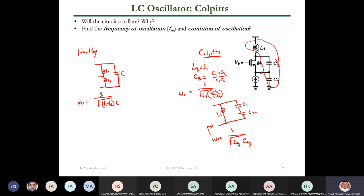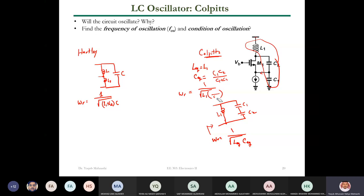Let's dive into the Colpitts and find the frequency of oscillation. One correction: the series capacitance formula should be C1·C2/(C1+C2) — multiplication over addition — yes, that's right.